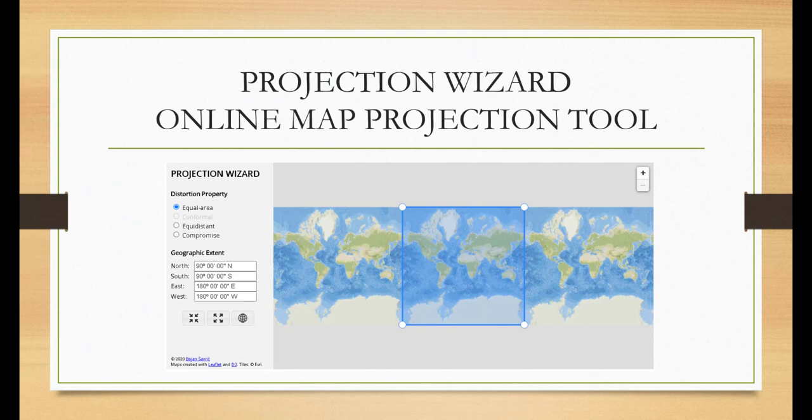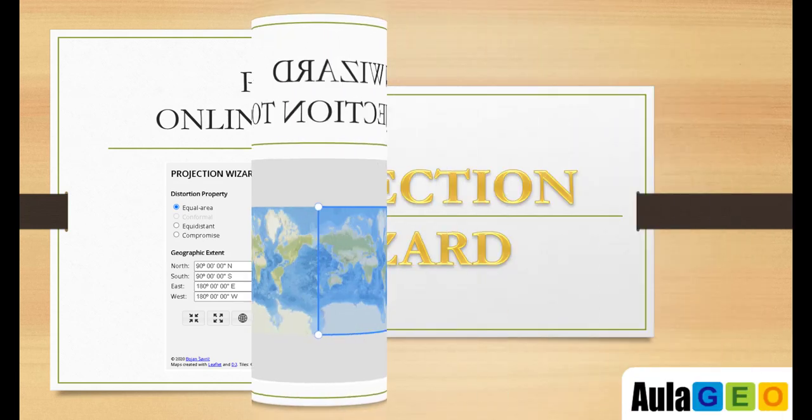The selection of map projection is difficult and confusing for many people. Let's get familiar with the Projection Wizard, which is an online map projection selection tool available at projectionwizard.org that helps map makers select projections. The user selects the desired distortion property and the area to be mapped on an interactive web map. Projection Wizard then proposes a projection along with projection parameters such as standard parallels. The tool also creates a preview map with the proposed projection and provides the corresponding projection code in proj.4 format if applicable.